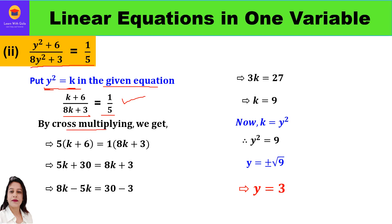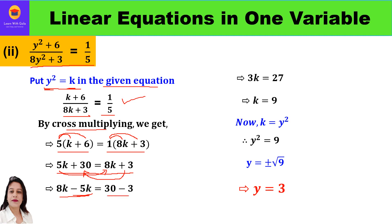Solving by cross multiplication: 5(k + 6) = 1(8k + 3). Opening brackets: 5k + 30 = 8k + 3. Taking like terms together — constants on one side, variables on the other — we get 8k - 5k = 30 - 3, which implies 3k = 27.